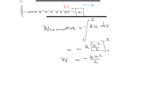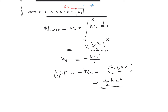To find the change in potential energy of the spring: change in PE = negative of work done by conservative force = negative of (−½kx²) = +½kx². So the change in potential energy of the spring is equal to ½kx².